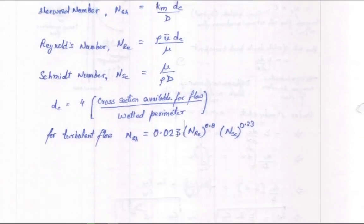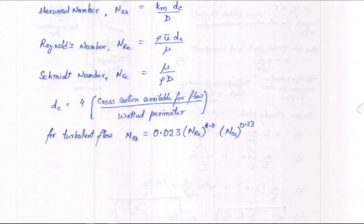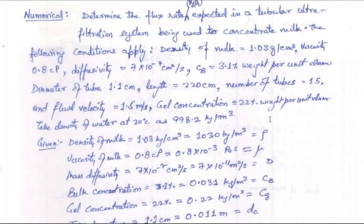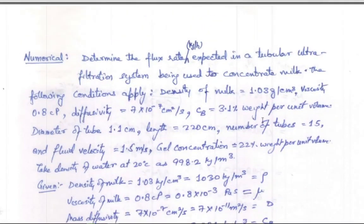For turbulent flow, the equation becomes fully analogous to the Dittus-Boelter equation, using Reynolds and Schmidt numbers raised to arbitrary powers. Now moving on to some numerical exercises based on these relationships.